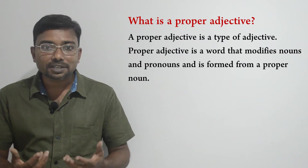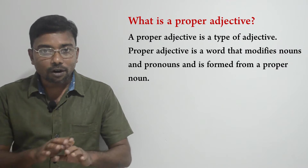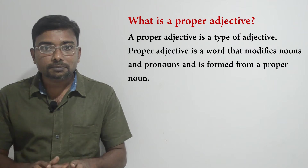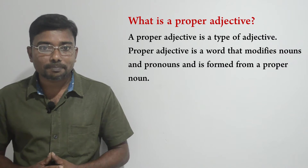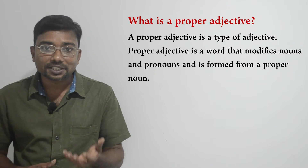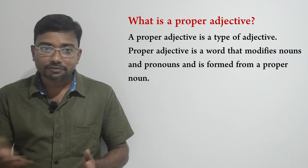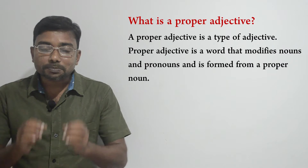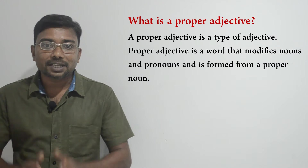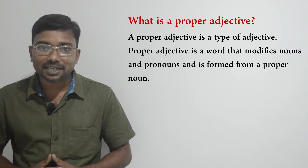Now we exactly know what is an adjective. Adjectives are words that we use to modify or describe a noun or pronoun in the sentence. Like all adjectives, this proper adjective we also use to modify or describe a noun or pronoun in the sentence, and they always stand directly before the noun to modify it.